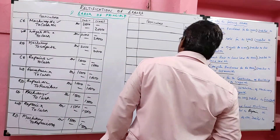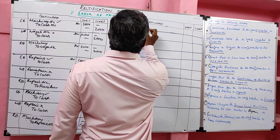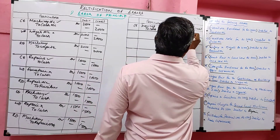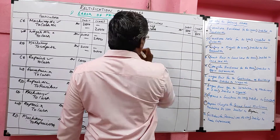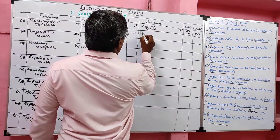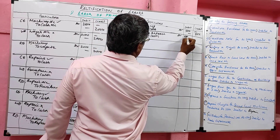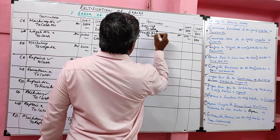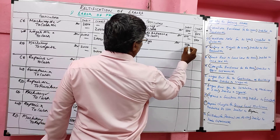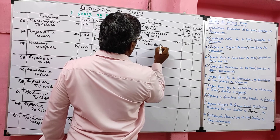Problem 10: Withdrew for personal use, rupees 500. Correct entry: drawings account debit to cash, 500. Wrong entry: debit given to trade expenses account instead of drawings. Wrong entry: trade expenses account debit to cash, 500. Rectified entry: drawings account debit to trade expenses account, 500 — drawings is correct, trade expenses is wrong; trade expenses was on debit side so for cancellation it goes to credit side.